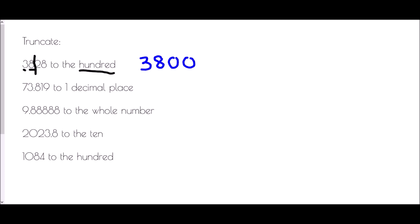In the next one we've got 73.819 and we're going to truncate it to one decimal place. All we need to think about is where is the one decimal place — it's the first digit after the decimal point. All we need to do is cut off beyond that point, so everything in front of that line remains exactly the same: 73.8. And in this case, because it's decimals that we're getting rid of, that is all we need to write: 73.8.